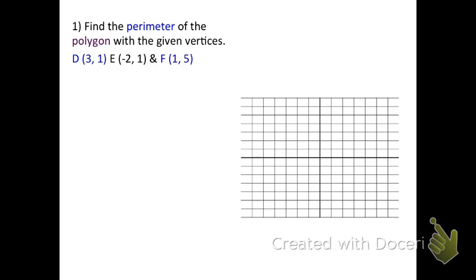The first example says find the perimeter of the polygon with the given vertices D, E, and F. Since we have three vertices, that means three corners, three sides, and therefore a triangle. The formula is P = s + s + s. First, we plot our points: D at (3, 1), E at (-2, 1), and F at (1, 5). Once those points are plotted, we draw the triangle.